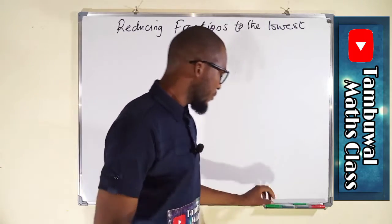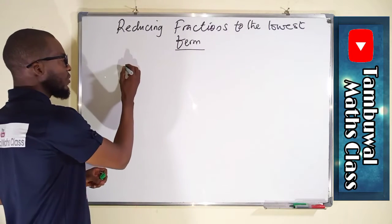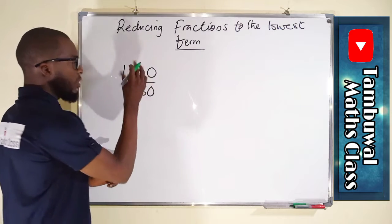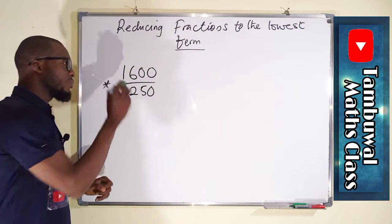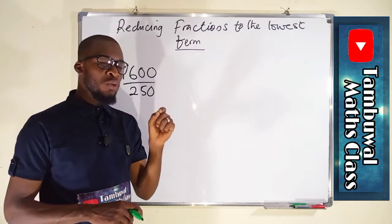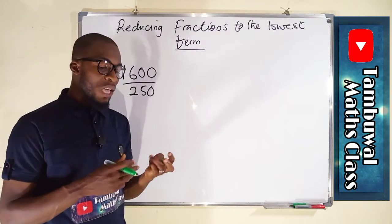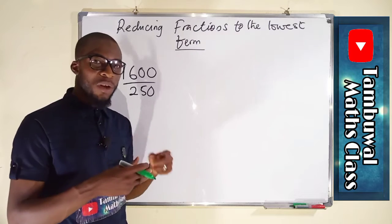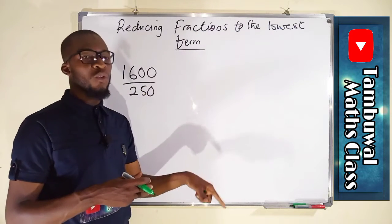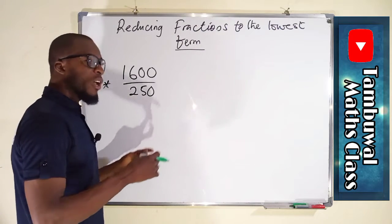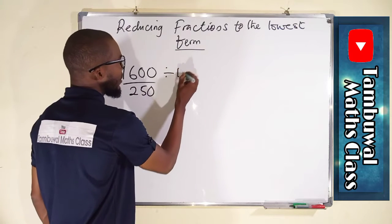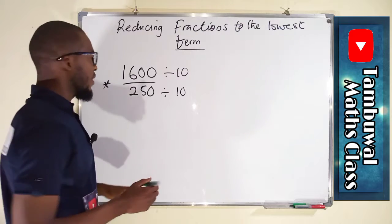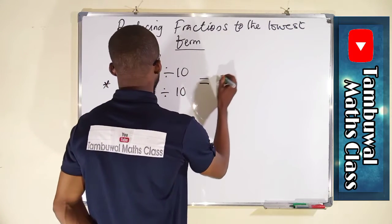First, we want to reduce 1600 divided by 250 to its lowest term. Any number that ends with zero can be divided by 10. In an equivalent fraction, whatever number you use to divide the numerator must be the same number used to divide the denominator. So we divide both by 10 — the zeros cancel, leaving 160 as our numerator and 25 as our denominator.